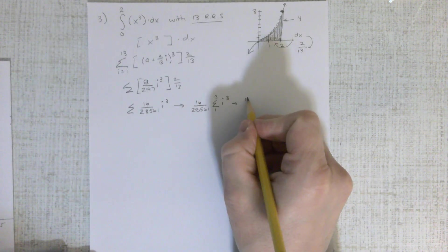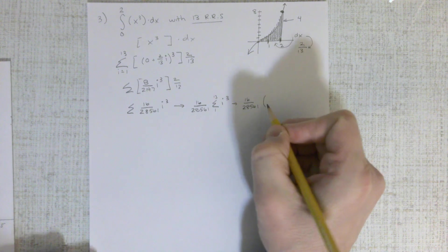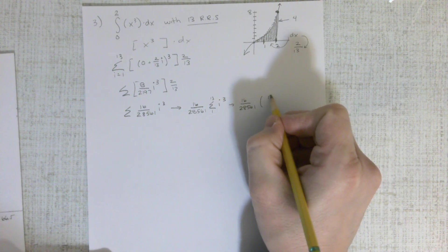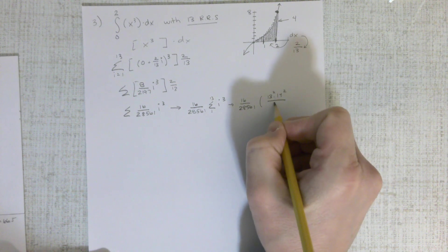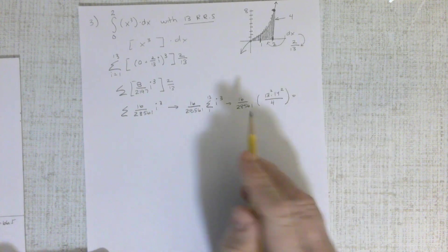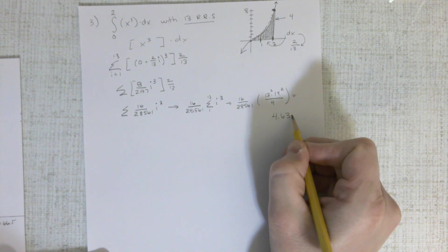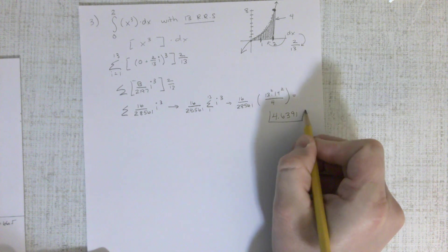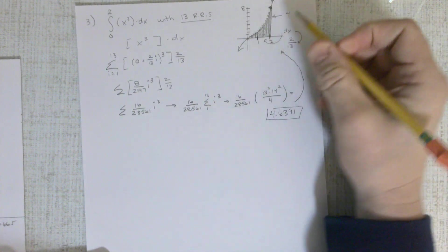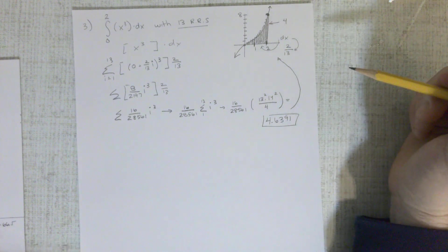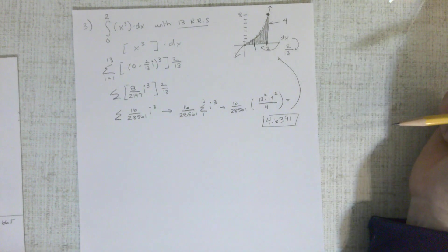That would be 16 over 28561 times 13 squared, sorry, divided by 4 squared. And if you run that through your calculator, you will get 4.6391, which is, like we said, going to be larger than that area of 4, because we've done right Riemann sums, and it's increasing, so we have all those little extra gaps on the right.